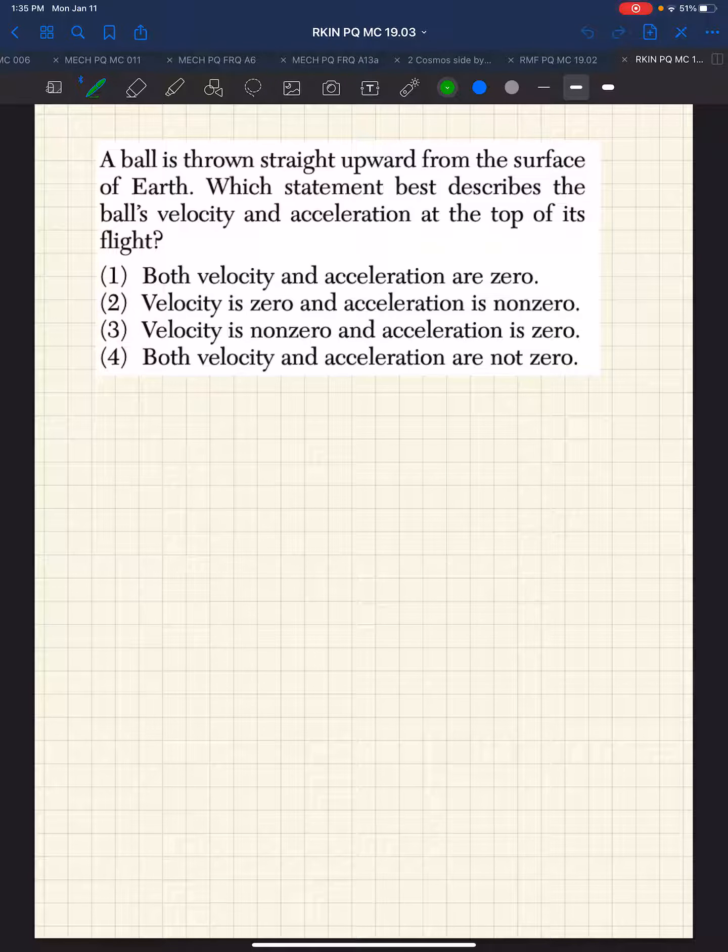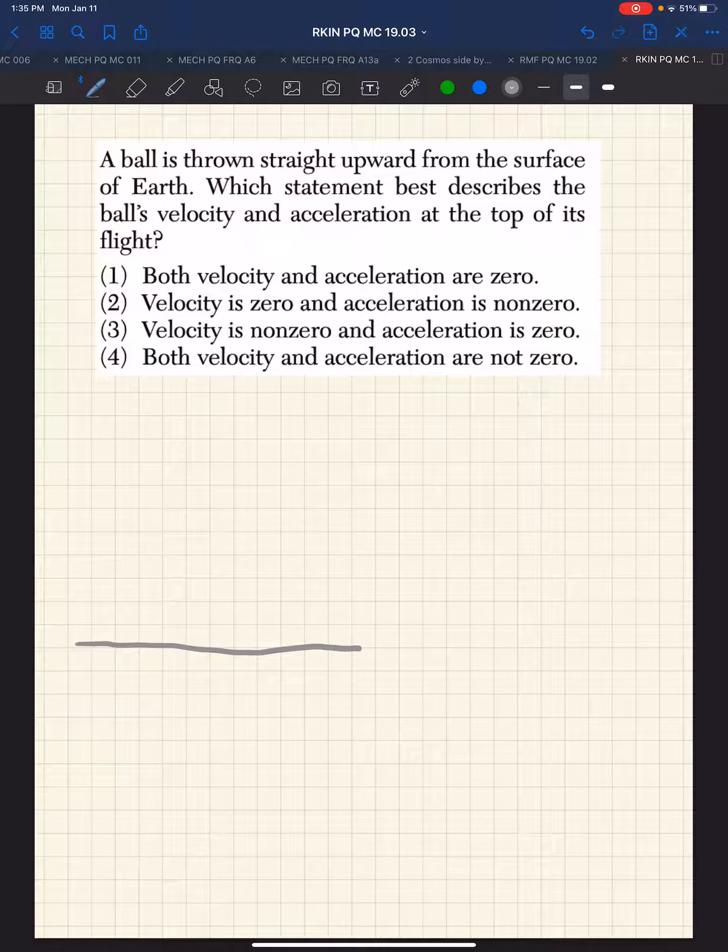So we have a ball thrown straight up from the surface of the earth. We'll start drawing right there - surface of the earth. A ball is thrown upward with some velocity. It gets to the top and then it comes back down.